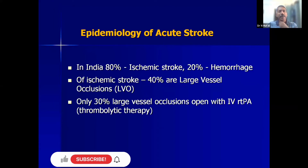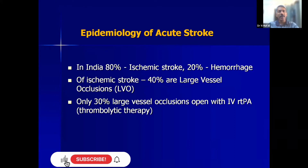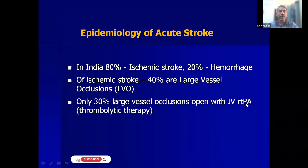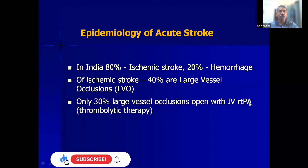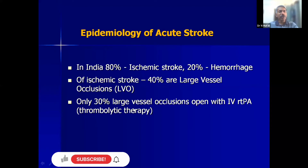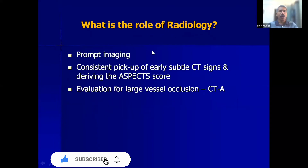In India, 80% of strokes are due to ischemic stroke — meaning a blood vessel is blocked — and 20% are due to hemorrhage, most commonly caused by hypertension. Of the ischemic strokes, 40% are large vessel occlusions. A recent treatment is giving intravenous recombinant tissue plasminogen activator (tPA), which dissolves clots, but when a large vessel is occluded only 30% open up, so additional intervention is also needed, making imaging of acute stroke very important.